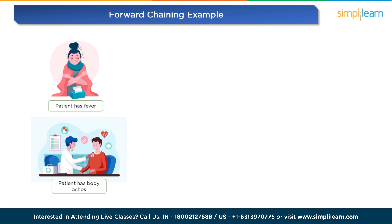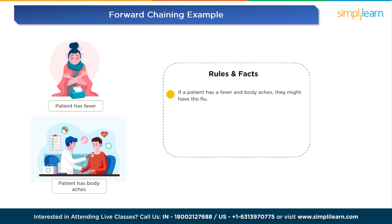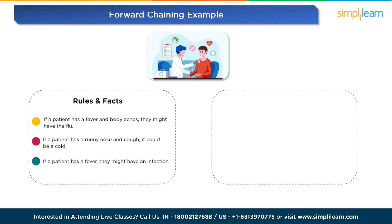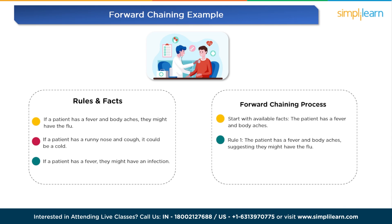Let's move to a real-world example of forward chaining. Scenario: diagnosing an illness. Consider the following facts: the patient has a fever and the patient has body aches. Rules: Rule 1 — if a patient has a fever and body aches, they might have the flu. Rule 2 — if a patient has a runny nose and cough, it could be a cold. Rule 3 — if a patient has a fever, they might have an infection. How does the forward chaining process work? Start with the available facts — the patient has a fever and body aches. Apply Rule 1: the patient has a fever and body aches, suggesting they might have the flu. This conclusion — might have the flu — becomes a new fact. At this point, the forward chaining process has derived a new conclusion based on the available facts and the rules.